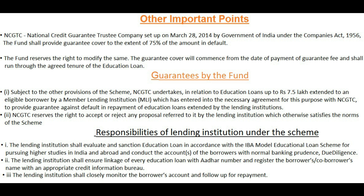Responsibilities of lending institutions under the scheme: the lending institution shall evaluate and sanction education loans in accordance with the IBA model education loan scheme for higher studies in India and abroad, and conduct the accounts with normal banking prudence and due diligence. The institution shall ensure linkage of every education loan with Aadhaar number, register the borrower's and co-borrower's name with an appropriate credit information bureau, and closely monitor the borrower's account and follow up for repayment.